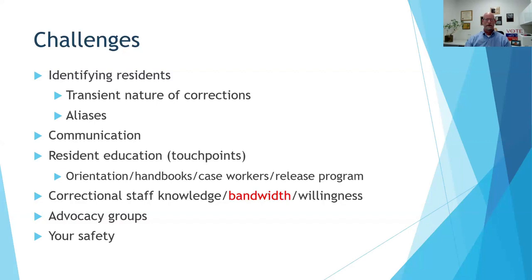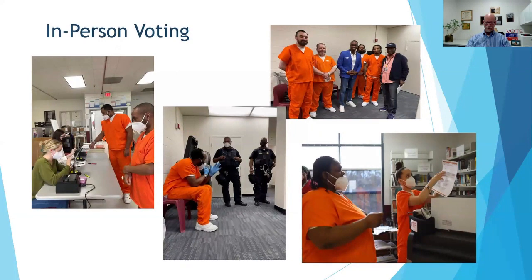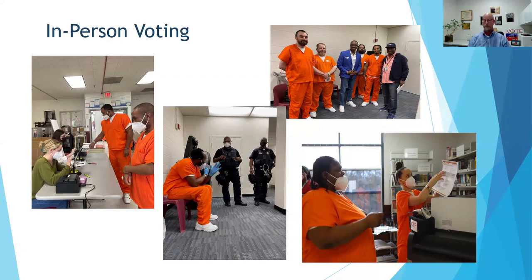I also list safety as a challenge to describe some pictures here. One photo shows my daughter — I certainly wouldn't allow her in an institution if I thought it was unsafe. Another shows one of our past ANC commissioners who won an election while incarcerated and came back after release to help with voting. The middle photo is a reminder that you are in a jail — correctional officers do have lots of safety equipment. The bottom right shows some of our inmate workers in action.